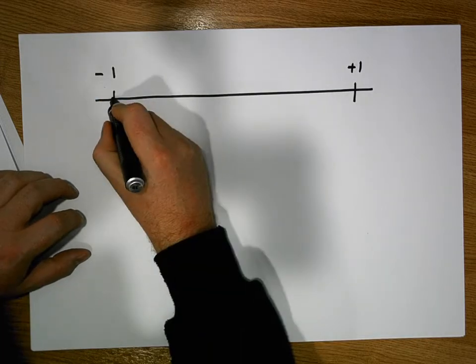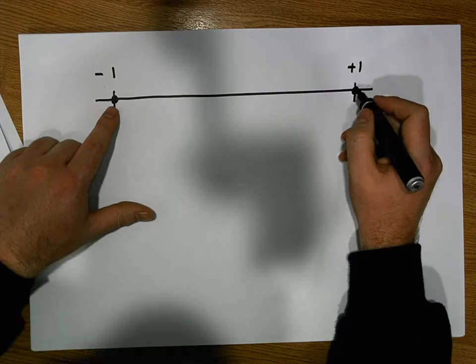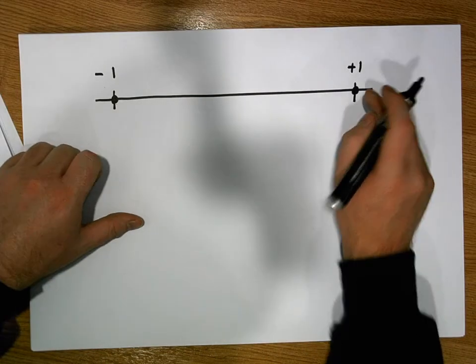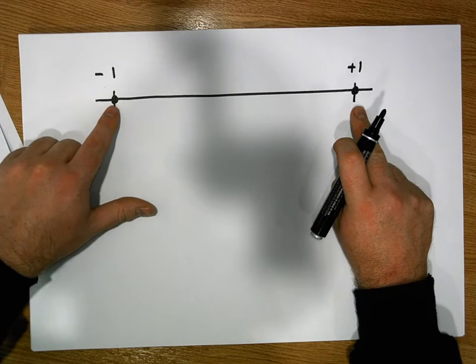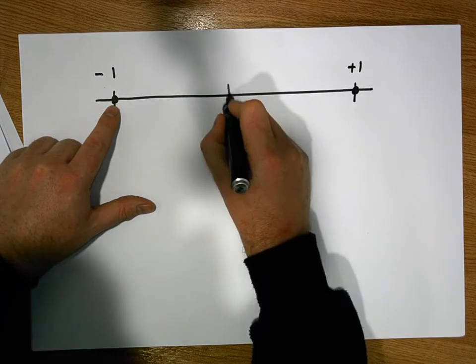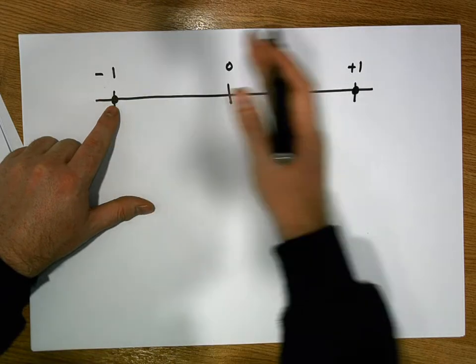It can be equal to minus 1, it can be equal to plus 1. We say if it's either minus 1 or plus 1 exactly, we say that there's a perfect positive correlation or association. If it's equal to minus 1, we say there's a perfect negative association. And then it could be around 0.